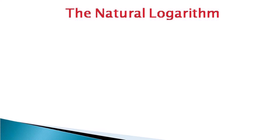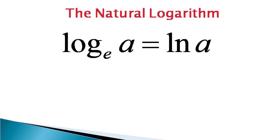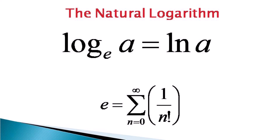Then comes the natural logarithm. In the natural logarithm, the base of the log is e, that is Euler's number. So log of a to the base e is also written as ln a — ln means the log with base e. Here, e is Euler's number expressed as the summation from n equal to 0 to infinity of 1 by factorial n, which comes somewhere near 2.78. It is an approximate number.